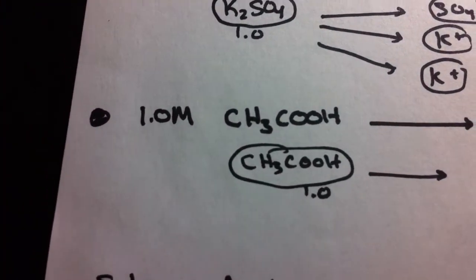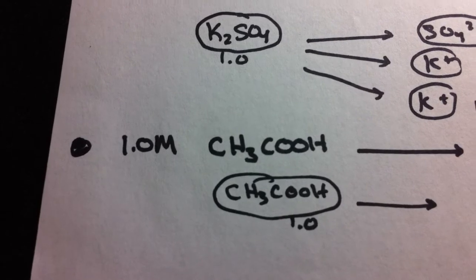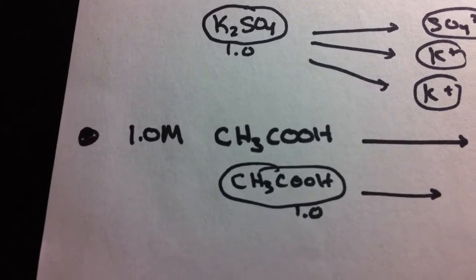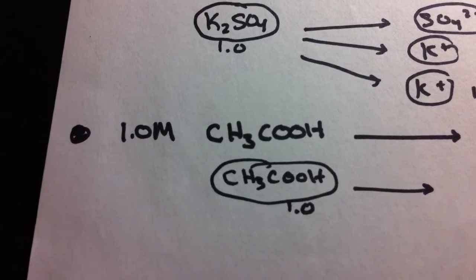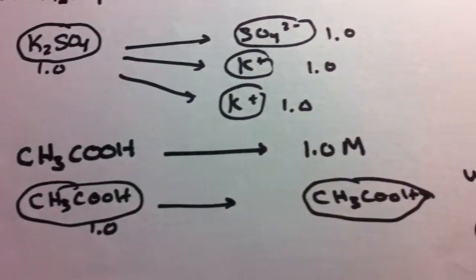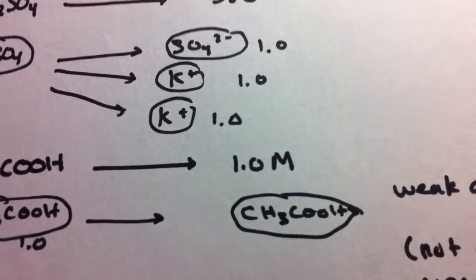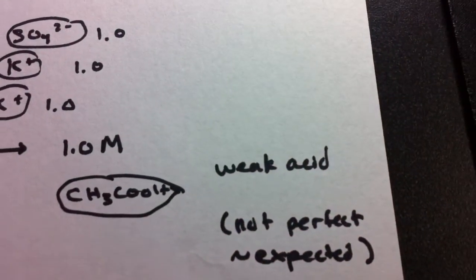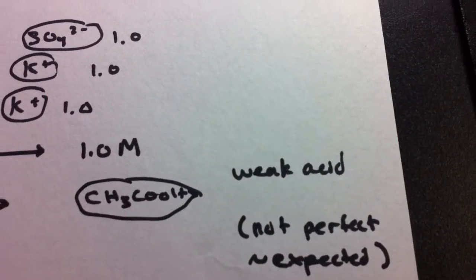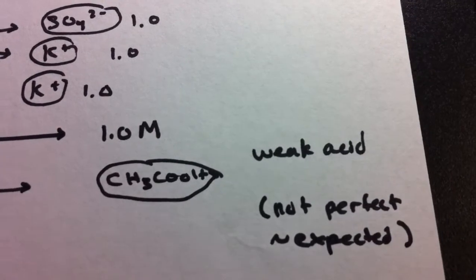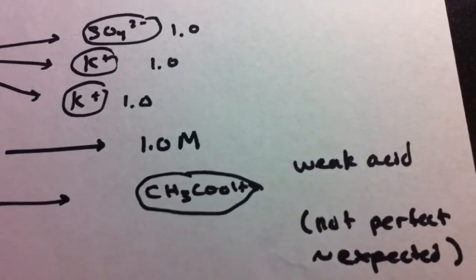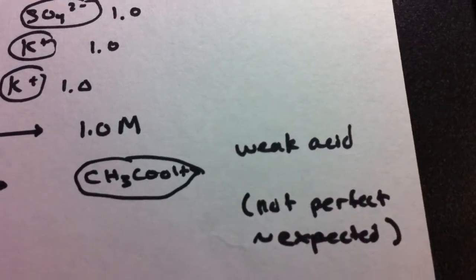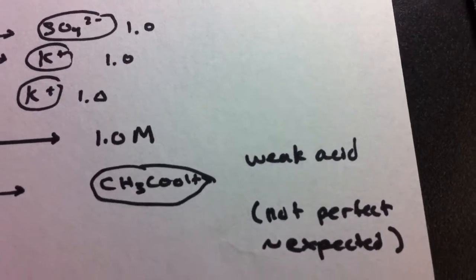If we want to talk about acetic acid, understand that it's a weak acid, so it's not going to dissociate as well. If we start with one molar, we're actually going to end up with approximately one molar. Because it's a weak acid, we have to remember there's still a little bit of dissociation. This number of one molar isn't exactly perfect, but it's considered our expected value.